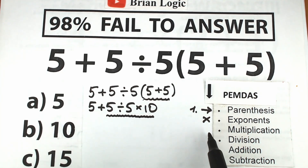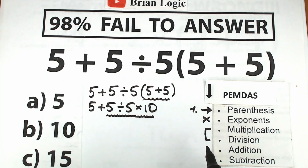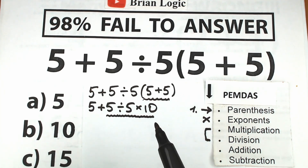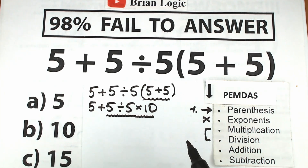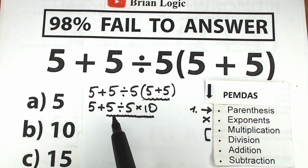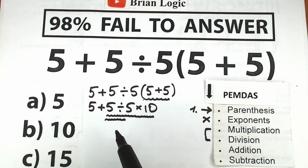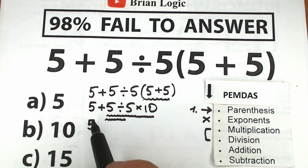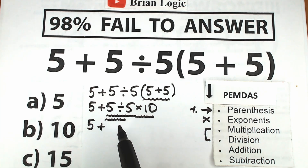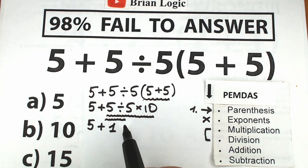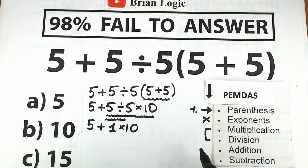Because multiplication and division have the same priority, we scan what is the first sign from left to right. The first sign from left to right is division. So we divide 5 divided by 5, which equals 1. So we have 5 plus — 5 divided by 5 equals 1 — times 10.